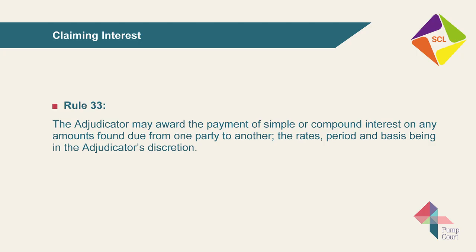The claimant has also sought interest under Rule 33. The adjudicator may award the payment of simple or compound interest on any amounts found due from one party to another, the rates, period and basis being in the adjudicator's discretion. This is another distinctive feature of the scheme: under statutory construction adjudication schemes, unless the parties agree, interest doesn't fall within an adjudicator's jurisdiction. The drafting committee felt this default position better reflected the commercial expectations of typical parties to technology disputes.